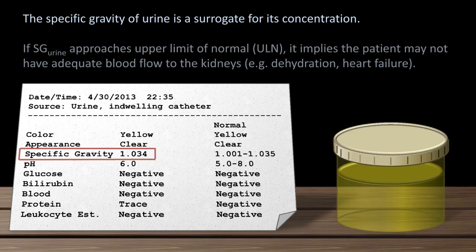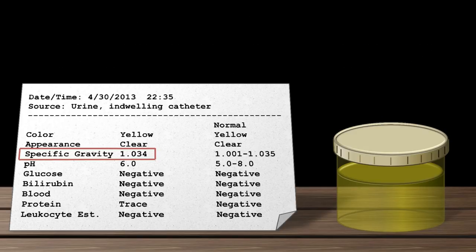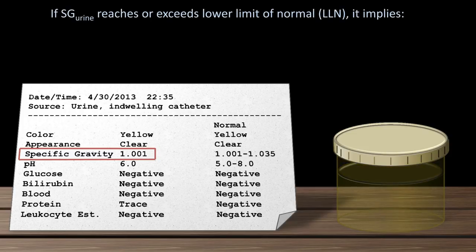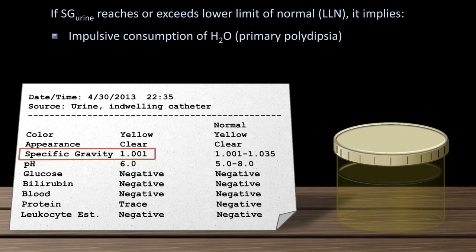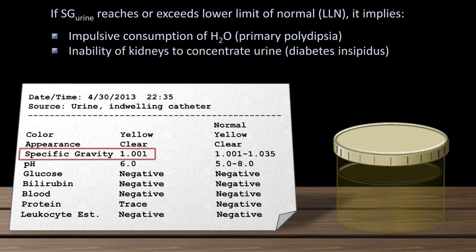For example, if the specific gravity of the urine approaches the upper limit of normal, it implies that the patient may not have adequate blood flow to the kidneys, usually due to either dehydration or heart failure. This will correspond with a urine that is very dark yellow in color. Conversely, if the specific gravity reaches or even exceeds the lower limit of normal, it implies one of three things. The patient may be experiencing an impulsive consumption of water, which is a psychiatric condition called primary polydipsia.